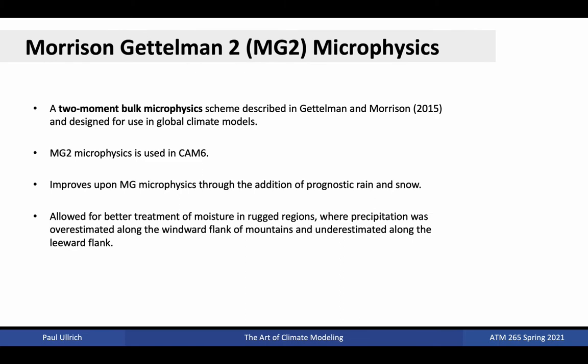CAM6 uses Morris and Gettleman II microphysics, a two-moment bulk microphysics scheme described in the paper by Gettleman and Morris in 2015. It improves upon MG microphysics, which was employed up through CAM5, with the addition of prognostic rain and snow. This means that rain and snow are actually tracked by the dynamical core, while in previous versions, the rain and snow were assumed to fall out to the surface instantaneously. As a consequence, there were substantial improvements in the treatment of precipitation in rugged regions, where the MG scheme had overestimated precipitation along the windward side of mountains and underestimated it along the leeward flank.